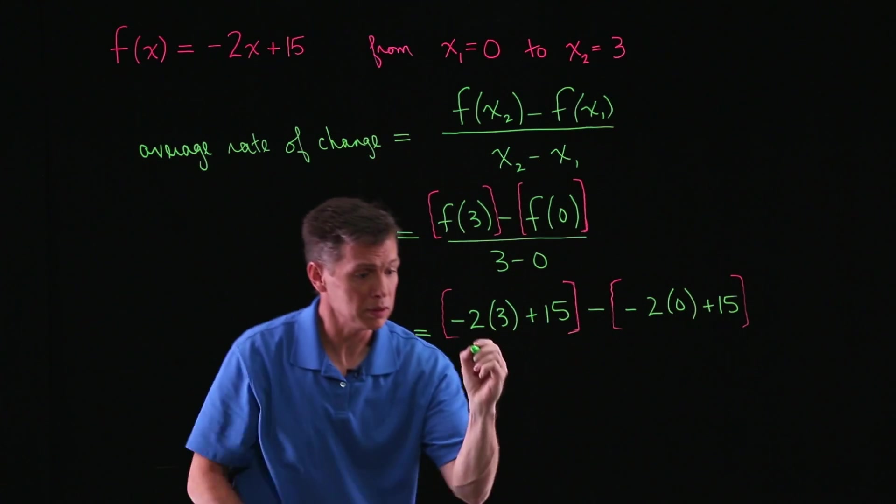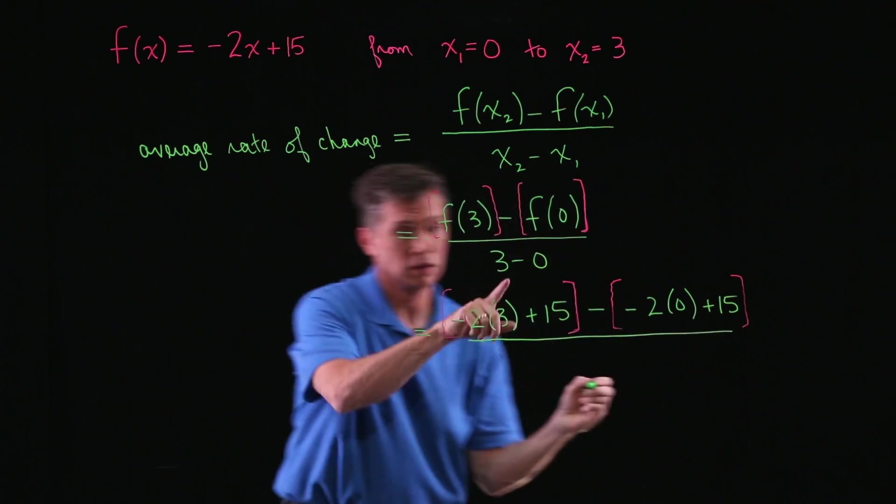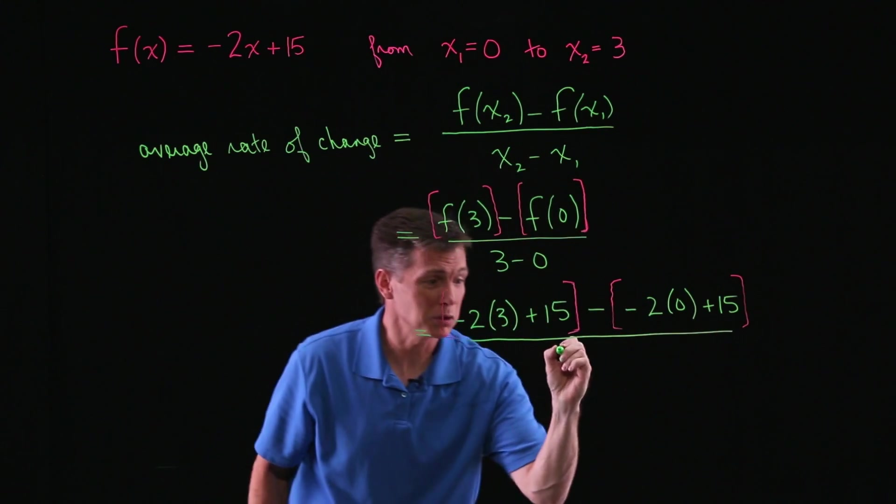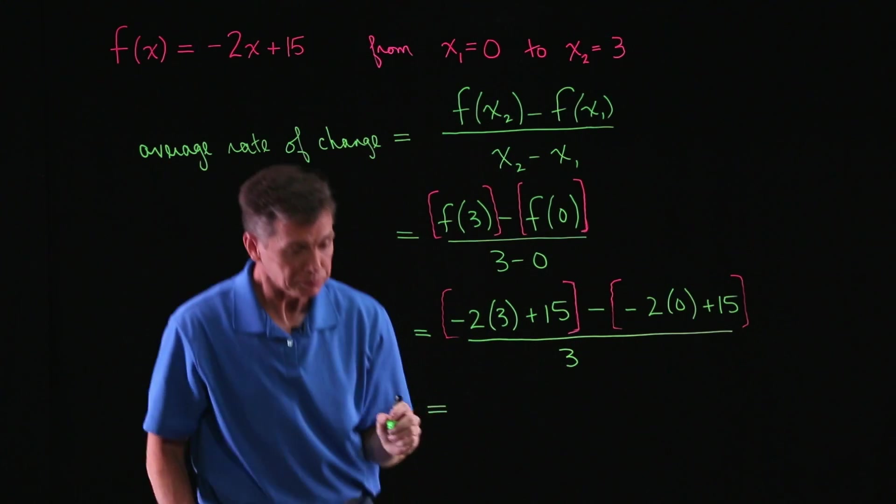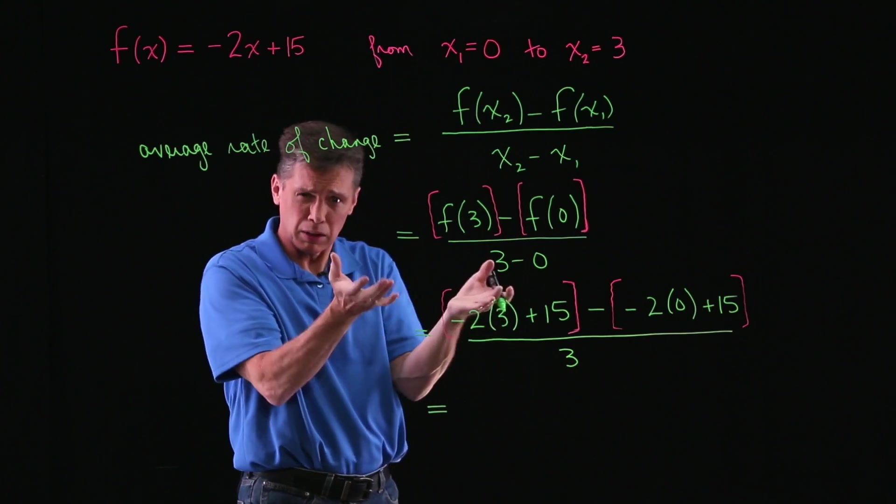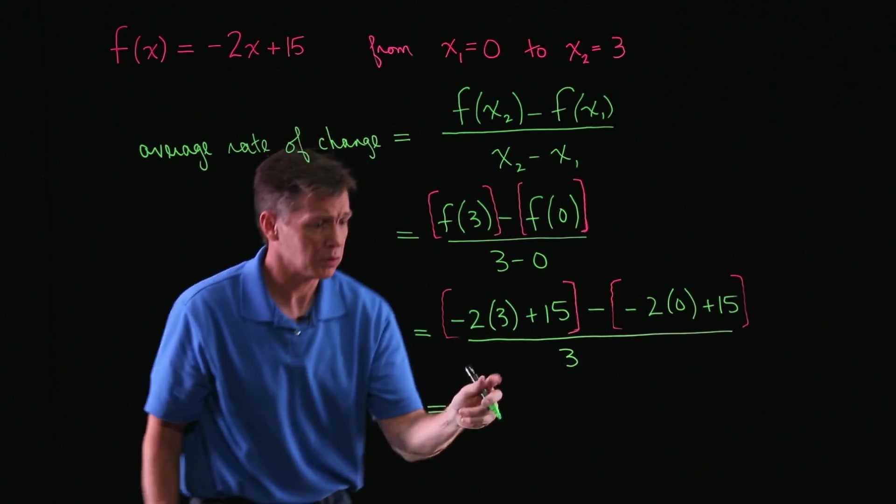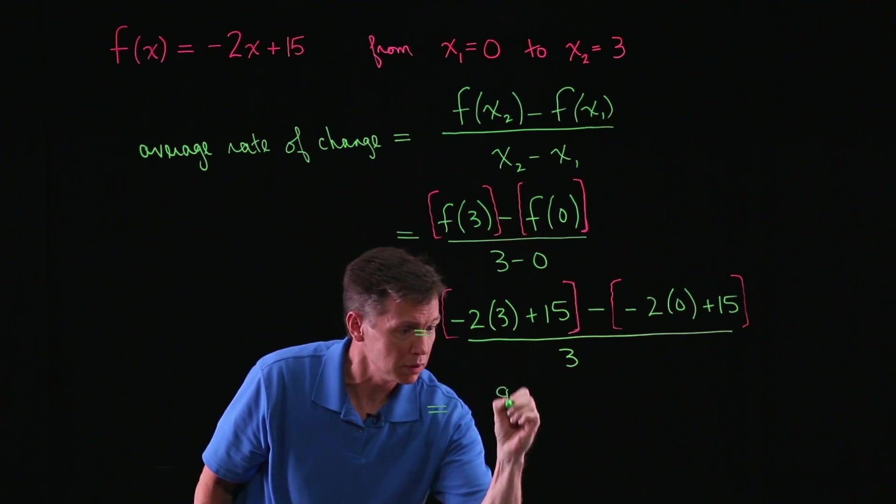Pick back up in the formula. Big divided by. I think I'll do this one. 3 minus 0 is just 3. And I'll go down one more step. In terms of doing that one, I'm going to do more arithmetic. The cleanup here is actually just arithmetic. So I'm looking at a negative 6 plus 15, that's 9.